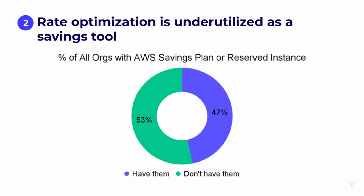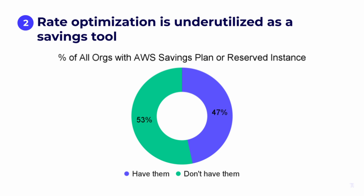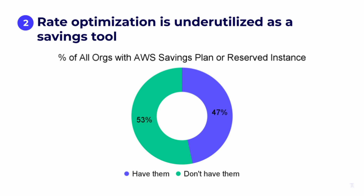Digging into discount instruments, we found that 53% of orgs did not use any savings plans or reserved instances. This may be because of the convention that rate optimization must follow engineering optimization — historically that made sense since you didn't want immutable commitments before stabilizing usage. However, with automation tools like ProsperOps, you can now match commitments to planned or unplanned changes in usage, so you don't have to wait to finish engineering optimization before starting rate optimization. You can run them in parallel, especially since engineering optimization really never stops.